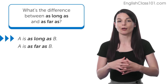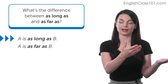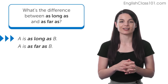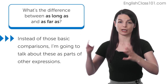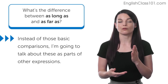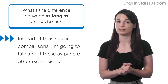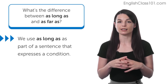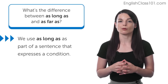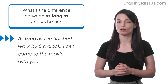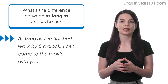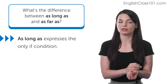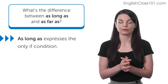So first, there is the basic comparison meaning of 'as long as'. But rather than that, I'm going to talk about these expressions as part of other expressions. We use 'as long as' as part of a sentence that expresses a condition. For example, 'As long as I finish work at 6 o'clock, I can come to the movie with you.' Another way of expressing this is 'only if I finish work at 6 o'clock can I come to the movie with you.' So 'as long as' expresses this 'only if' condition.